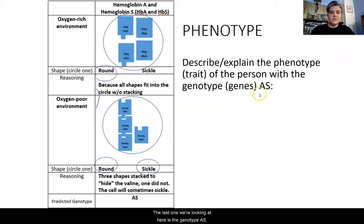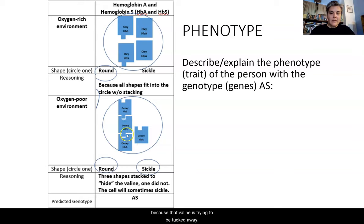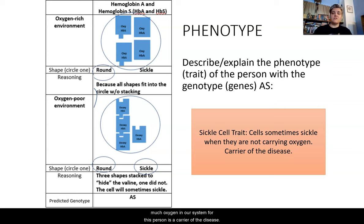The last genotype we're looking at is AS. In an oxygen-rich environment, the subunits fit in nicely — a full, round red blood cell with no stacking or long chain. However, in an oxygen-poor environment, a chain starts to develop because that valine is trying to be tucked away, so there is a possibility that the red blood cell could sickle at some point in time — or it could remain round. This person has sickle cell trait and is a carrier of the disease.